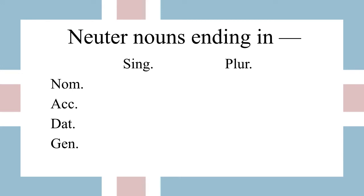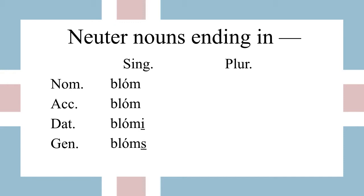So let's talk first about these neuter nouns that end in anything. The example we'll be using is blóm, which means flower. We have nominative blóm, accusative blóm, dative blómi, and genitive blóms. This is a pretty consistent pattern across all neuter words. Especially note how the nominative and the accusative forms are the same — that will always be the case.